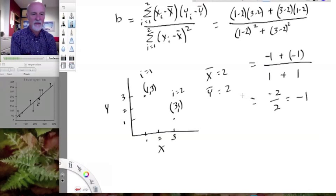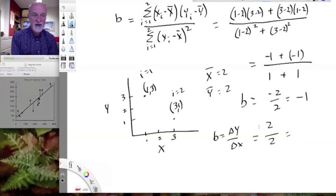This is our estimate of the slope. Did we need to do all that work? Not really, because we could have done b equals the change in y over the change in x. What's my change in y? Two. What's my change in x? Two. My change in y is minus two and it's minus one. We're getting the same slope.